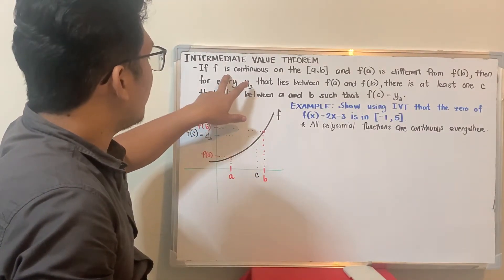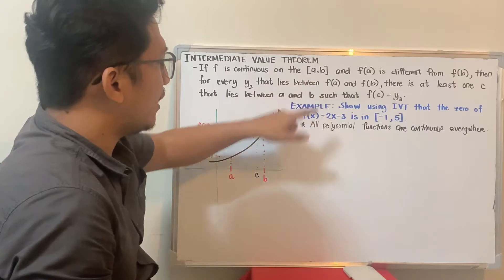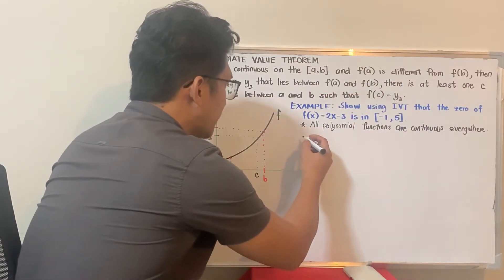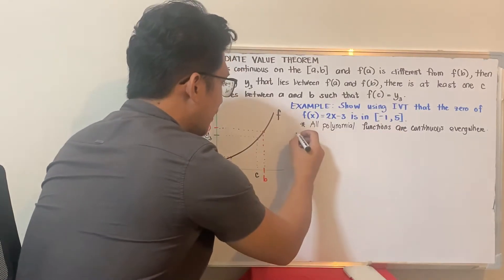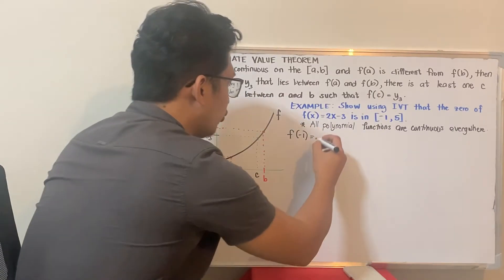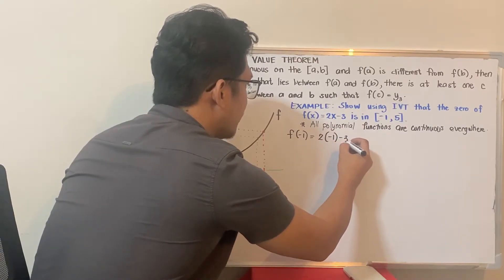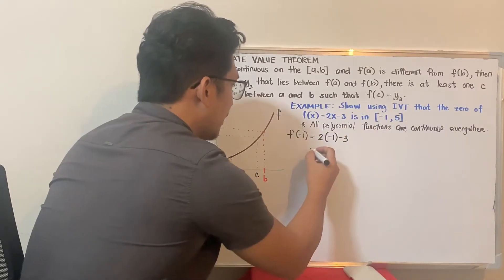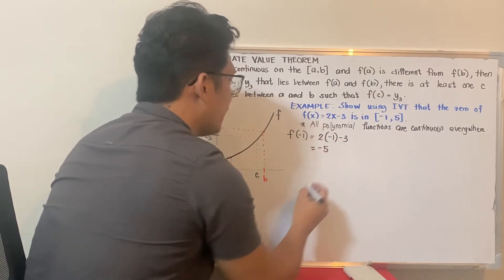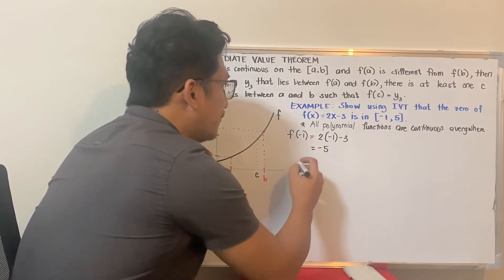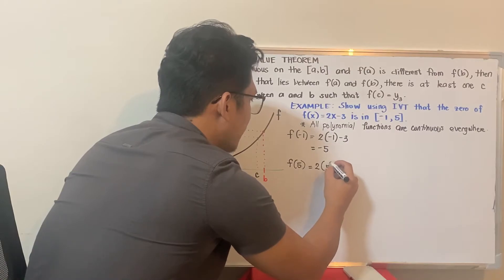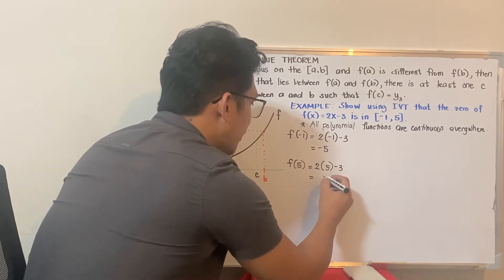Next, check f(a) and f(b) to see if they are different. So f(−1) = 2(−1) − 3 = −2 − 3 = −5. And f(5) = 2(5) − 3 = 10 − 3 = 7. So those are the two values.